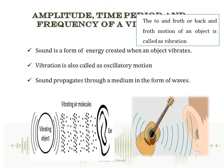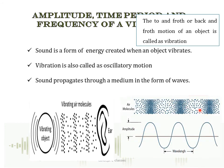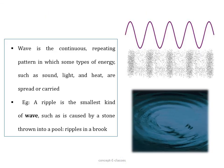When a vibrating object vibrates, it causes the surrounding particles in the medium to vibrate. These particles collide with neighboring particles, and they keep colliding until the vibration reaches the ear, allowing us to hear the sound. This periodic disturbance inside the medium is termed a wave, consisting of compressions and rarefactions. In short, sound propagates through a medium in the form of waves — when an object vibrates, sound waves are formed.